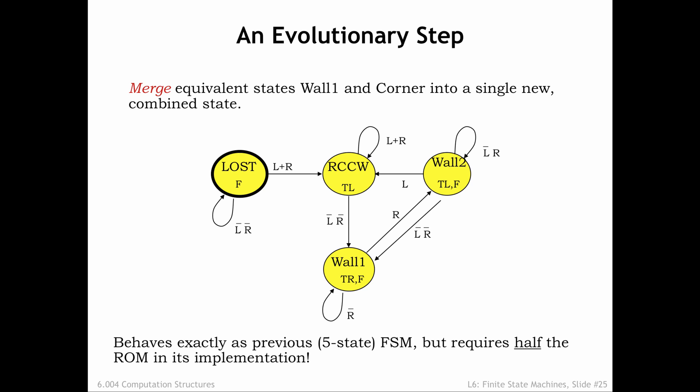This gives us the 4-state FSM shown here, where we've called the single merged state wall 1. This smaller, equivalent FSM behaves exactly as the previous 5-state FSM. The implementation of the 5-state machine requires 3 state bits, while the 4-state machine only requires 2 state bits. Reducing the number of state bits by 1 is huge since it reduces the size of the required ROM by half! Just as we achieved considerable hardware savings by minimizing boolean equations, we can do the same in sequential logic by merging equivalent states.